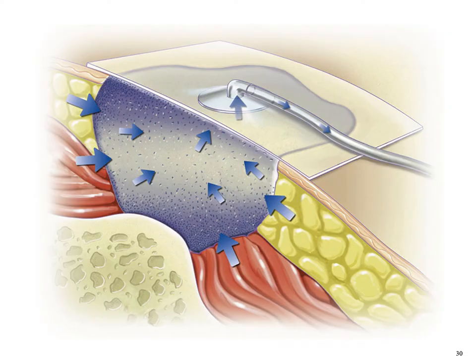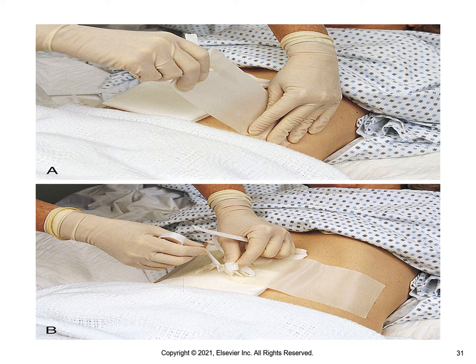A wound vac system uses negative pressure to remove fluid from the area surrounding the wound, helping reduce edema and improve circulation. To avoid repeated removal of tape from sensitive skin, dressings may be secured with pairs of reusable Montgomery ties. Each section consists of a long strip — half with adhesive backing applied to the skin, and the other half with cloth ties or a safety pin that can be fastened across the dressing and untied at dressing changes.